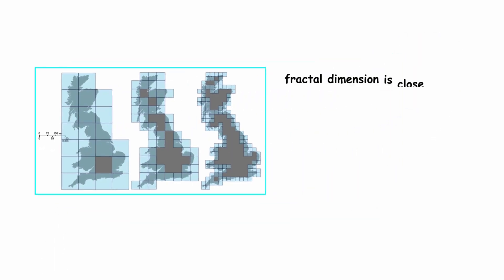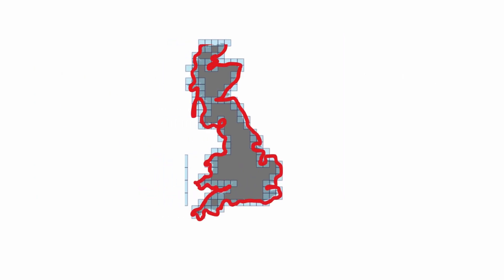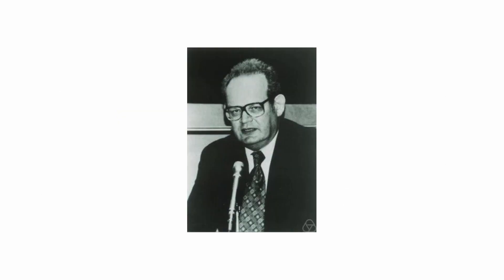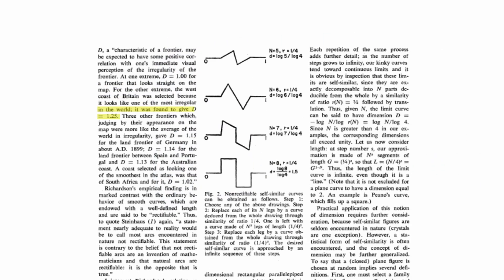For many coastlines, the fractal dimension is close to 1.3, meaning that it does not behave like a straight line, but has a more complex structure. In his paper, Mandelbrot claims that the fractal dimension of Britain's coastline is 1.25.